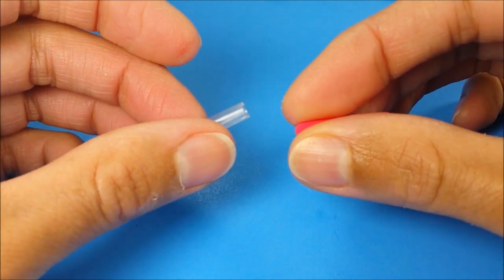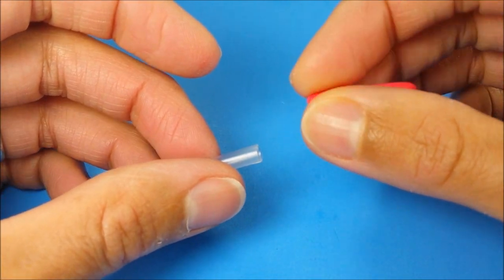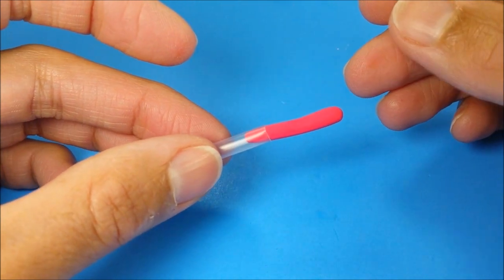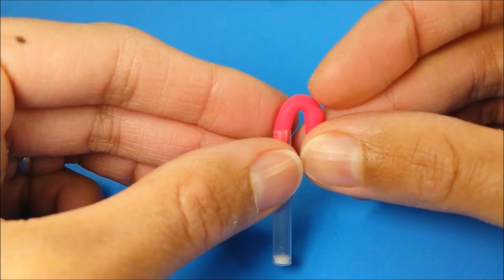I narrow down the bottom until it fits in my straw and fold it over to make my little candy cane.